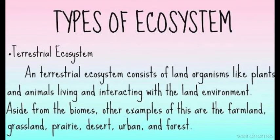A terrestrial ecosystem consists of organisms like plants and animals living and interacting with the land environment. Aside from the biomes, other examples of these are the farmland, grassland, prairie, desert, urban, and forest.